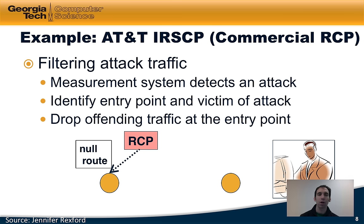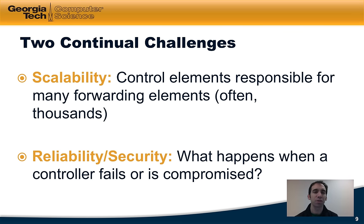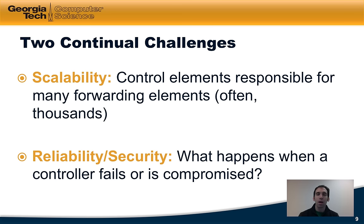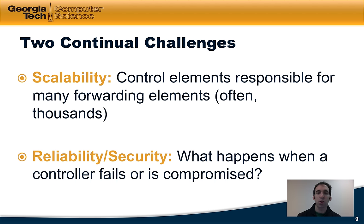Those are just two examples of how control and data plane separation has helped in specific cases, but there are also challenges to making it a reality. The first is scalability — once you separate the control elements from the forwarding elements, a control element may be responsible for many, sometimes thousands, of forwarding elements. The other challenge is reliability or security: what happens if a controller fails or is compromised? We should hope that the forwarding elements continue forwarding traffic as usual, but once we've separated the brains of the network from the devices actually forwarding traffic, correct behavior is no longer guaranteed. In the coming two lessons, we'll talk about both the opportunities and challenges associated with separating the data and control planes.